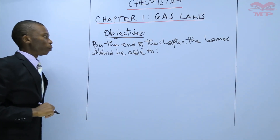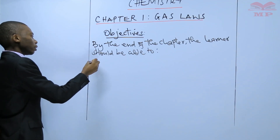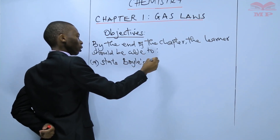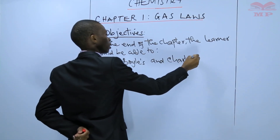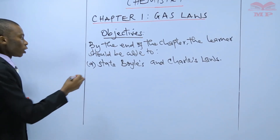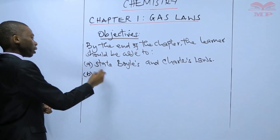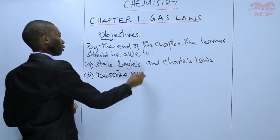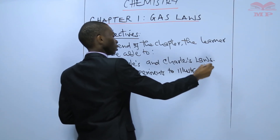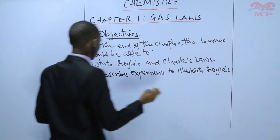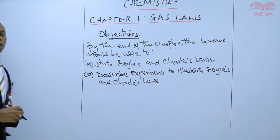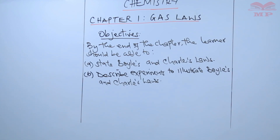By the end of the chapter, the learner should be able to: first, state Boyle's law and Charles's law. The second objective is to describe experiments to illustrate Boyle's law and Charles's law.